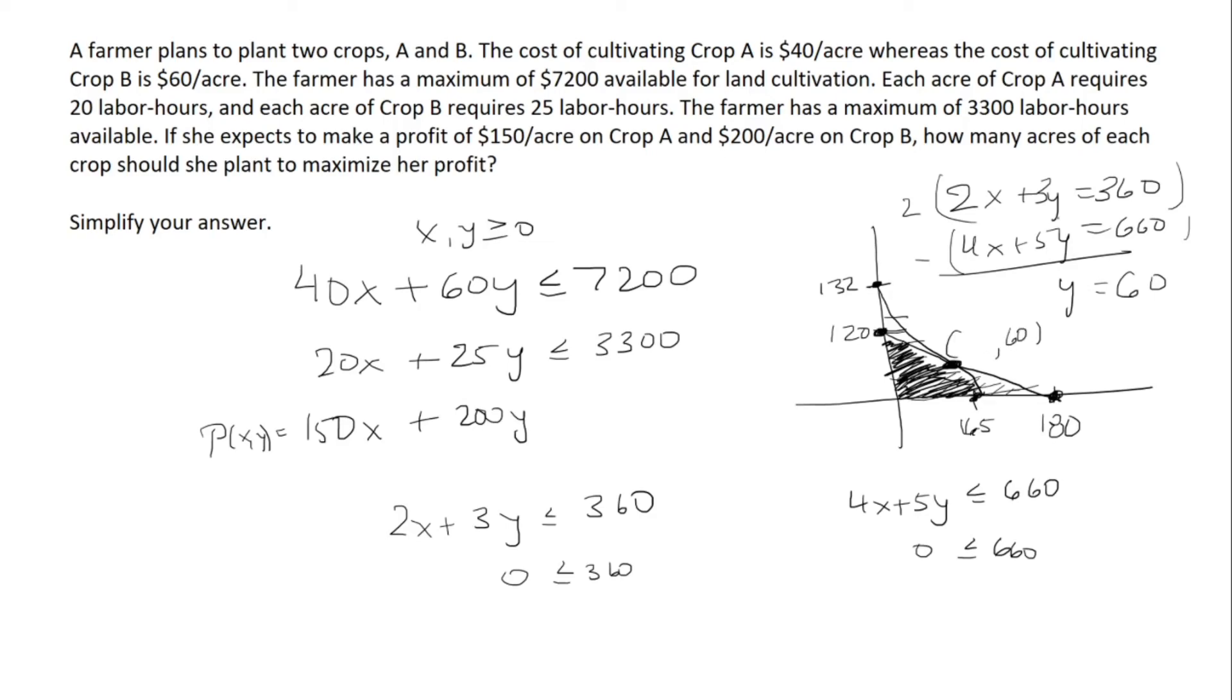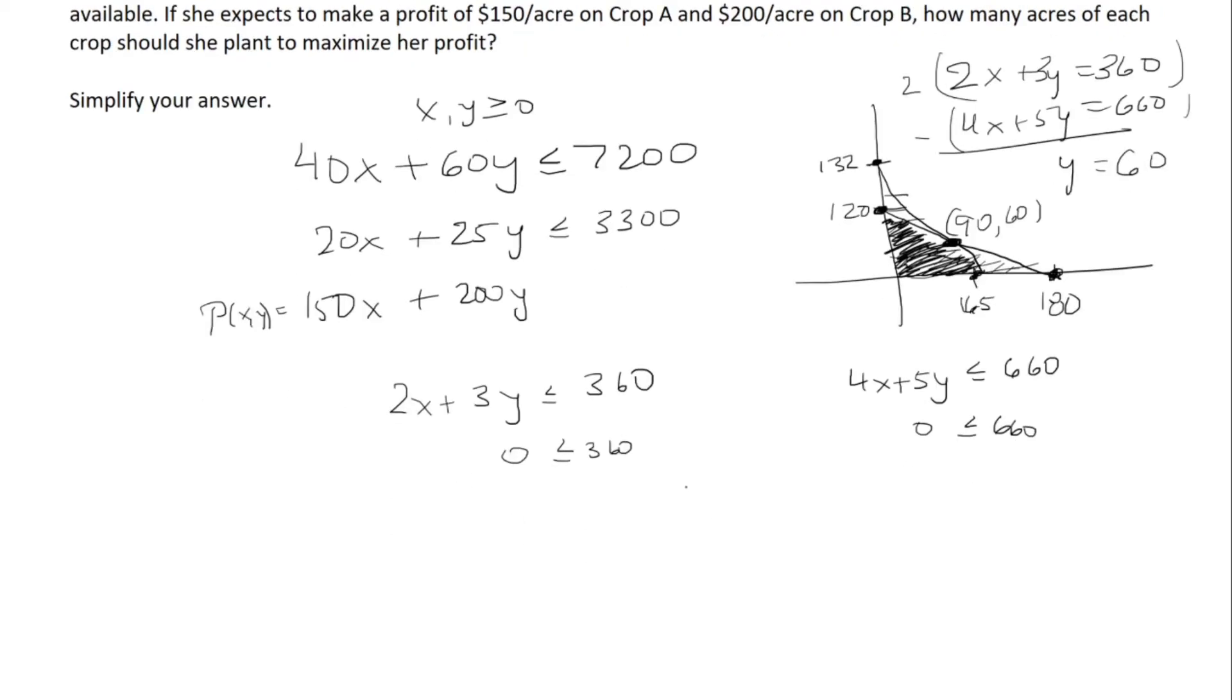I can plug it into either equation. If y is 60, 3 times 60 is 180. Subtract both sides by 180, we get 2x is 180, so x is 90. So now we can test these three points: (0, 120), (90, 60), and (165, 0).